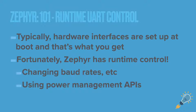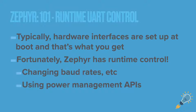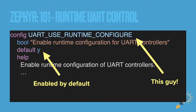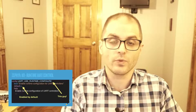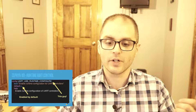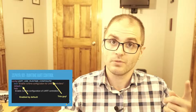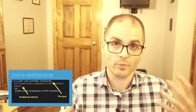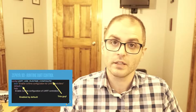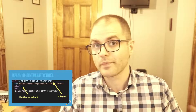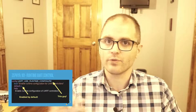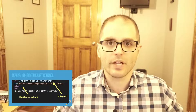The nice thing is there are APIs that exist that you can use to change these parameters as you go. By default, the UART use runtime configuration is enabled, so you don't have to do anything extra for this to work. If you want to change any of these configuration variables during runtime, it's already turned on. If you don't care about that and want to use the static settings from your device tree overlays, you can turn this off and save a little bit of space.